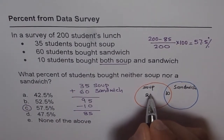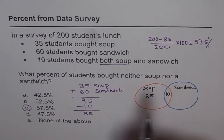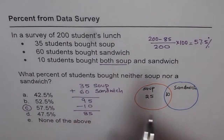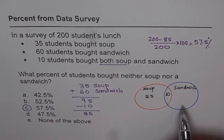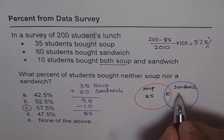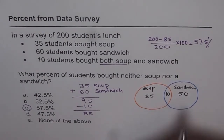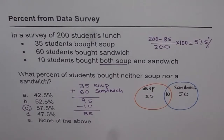10 had both. For sandwich, 60 students bought sandwich, so in that circle we should get 60. 10 are common, so the remaining are 50 for sandwich only. That is the distribution from the Venn diagram.